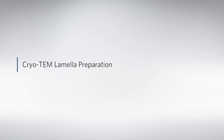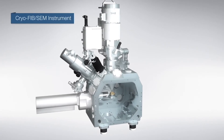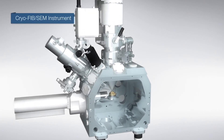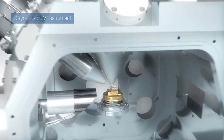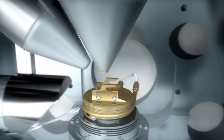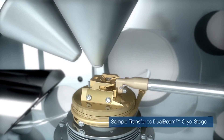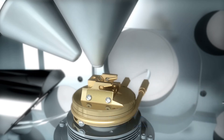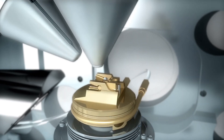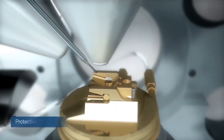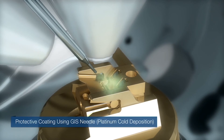Because whole eukaryotic cells are too thick for high-resolution imaging by transmission electron microscopy, we need to thin them down. For this, we take advantage of our latest developments in focused ion beam technology. The cells are mounted on the chamber of a dual-beam focused ion and electron beam scanning electron microscope, then coated by a protective layer of organometallic platinum.